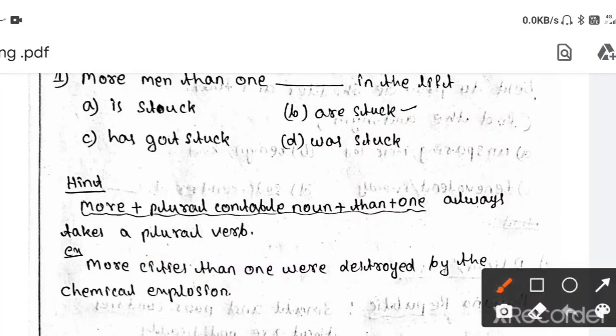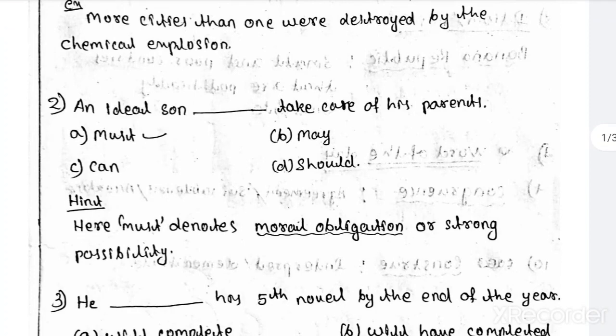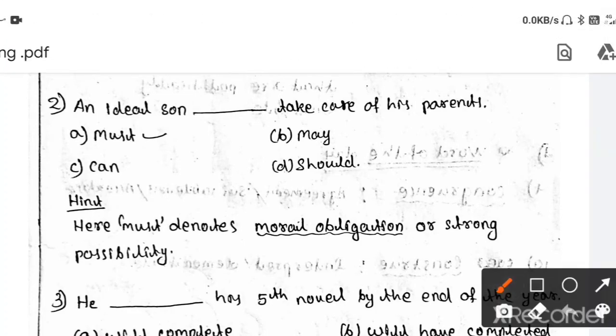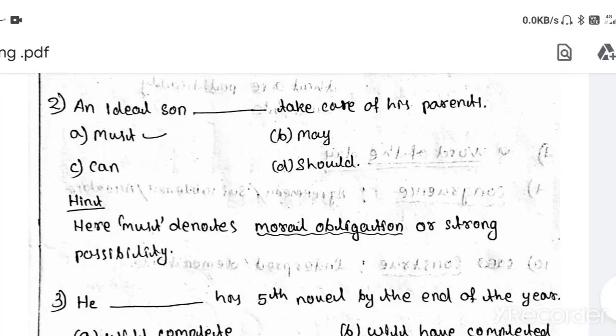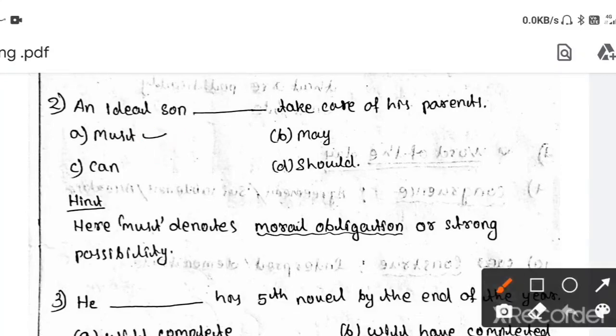Then next question. An ideal son dash take care of his parents. Then answer is your must. Then why must? Because your must denotes moral obligation, that's a responsibility of an ideal son, or strong possibility. That's why it is taken as must.